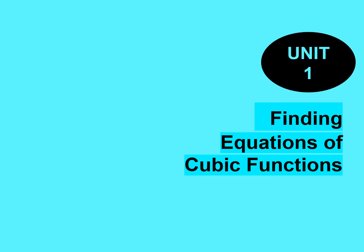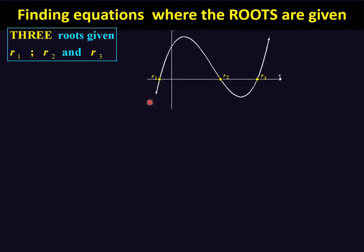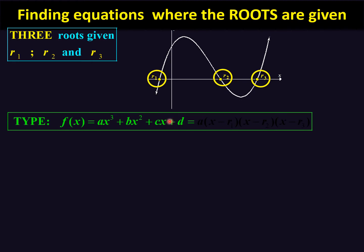Let's start with finding equations of cubic functions where the roots are given. Being a cubic, the maximum number of roots is 3. So if we have three roots R1, R2, and R3, we can look at it graphically. There's the cubic function with R1, R2, and R3 shown. The standard form of a cubic function consists of four terms. Because we have a coefficient a, we can write: a times (x minus root 1) times (x minus root 2) times (x minus root 3).